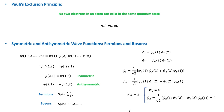In 1925, Wolfgang Pauli discovered the principle that determines the electronic configuration in an atom that has more than one electron, and it is known as Pauli's exclusion principle. According to this principle, no two electrons in an atom can exist in the same quantum state. Each electron must have a different set of the quantum numbers N, L, M, ML, and MS. It is impossible for two electrons to have the same values for all of these quantum numbers.